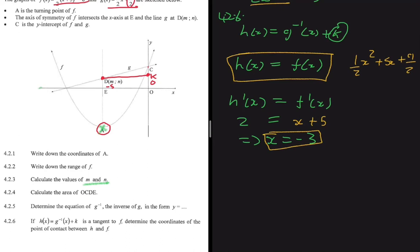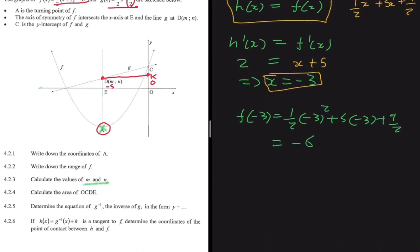Now substituting x = -3 into f(x) — since we can't substitute into h(x) without knowing k — we get f(-3) = ½(-3)² + 5(-3) + 9/2 = -6. So h and f touch at the point (-3, -6).